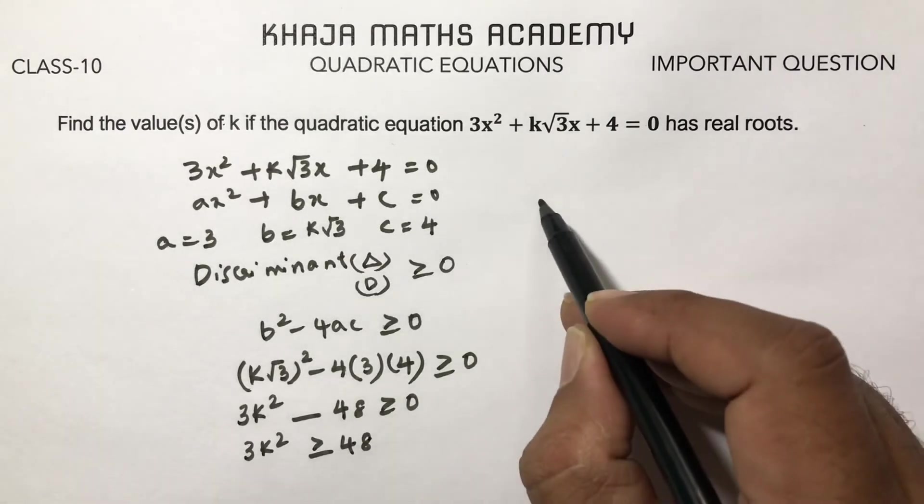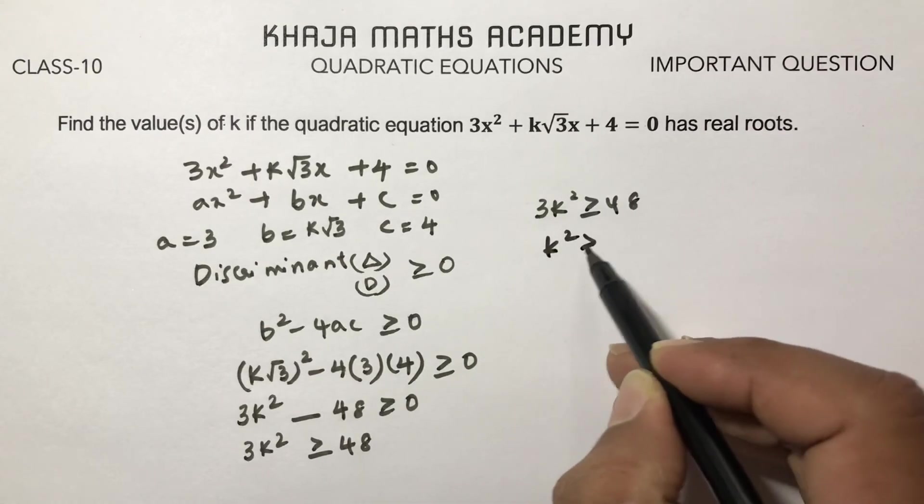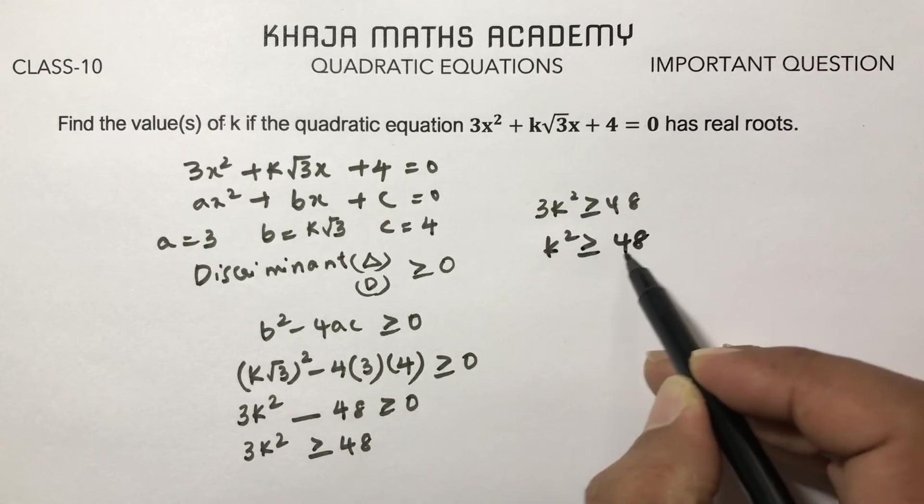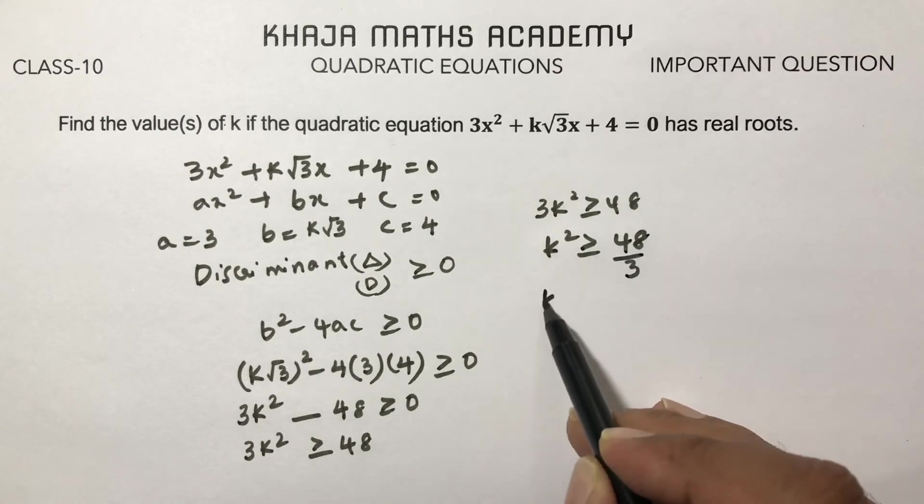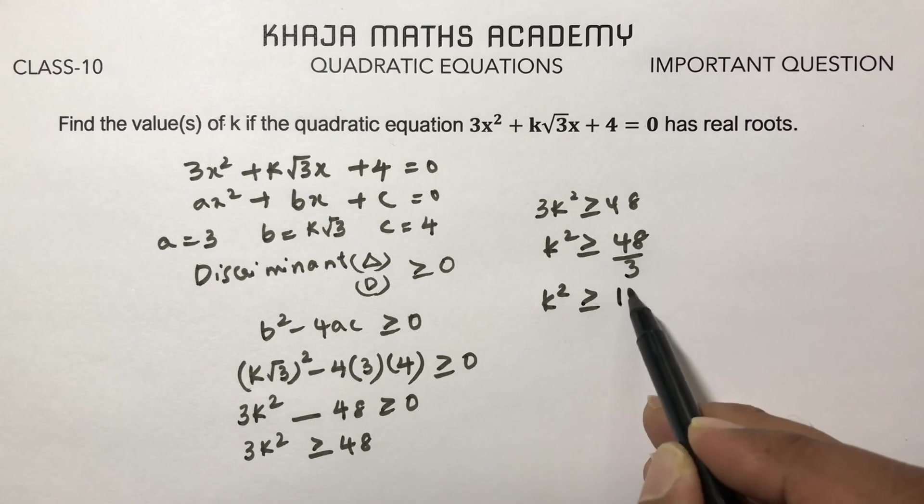Therefore k² ≥ 48/3, which simplifies to k² ≥ 16.